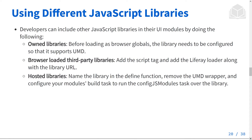There are a few other ways that you can provide a JavaScript library to Liferay. For owned libraries, before loading it to the browser, you'll need to configure it so that it supports the universal module definition. For browser-loaded third-party libraries, you can add the script tag and the Liferay loader along with the library URL. If you have a hosted library, name the library in the define function, remove the UMD wrapper, and configure your module's build task to run the config.js modules task over that library.